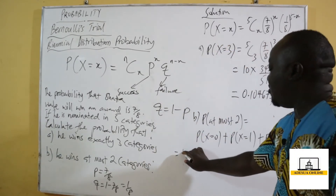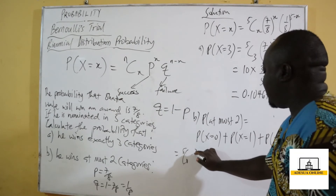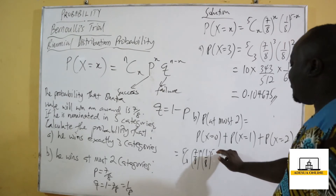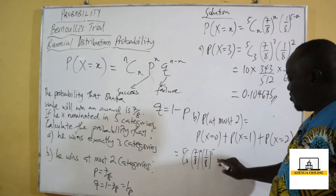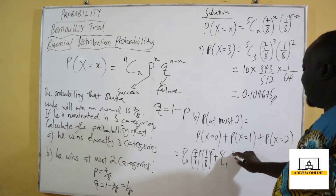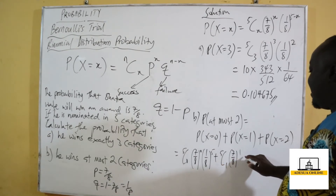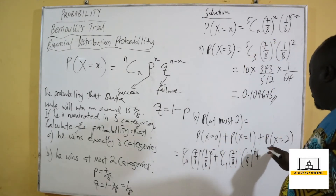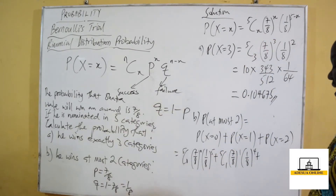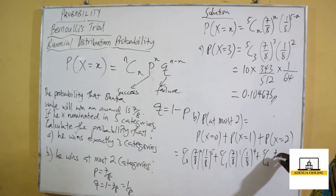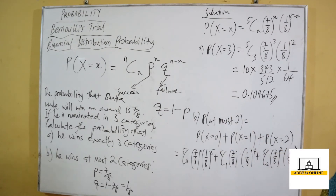For x equals zero, we have 5C0 times (7/8)^0 times (1/8)^5. For x equals one, we have 5C1 times (7/8)^1 times (1/8)^4. And for x equals two, we have 5C2 times (7/8)^2 times (1/8)^3, which is (1/8)^(5−2).